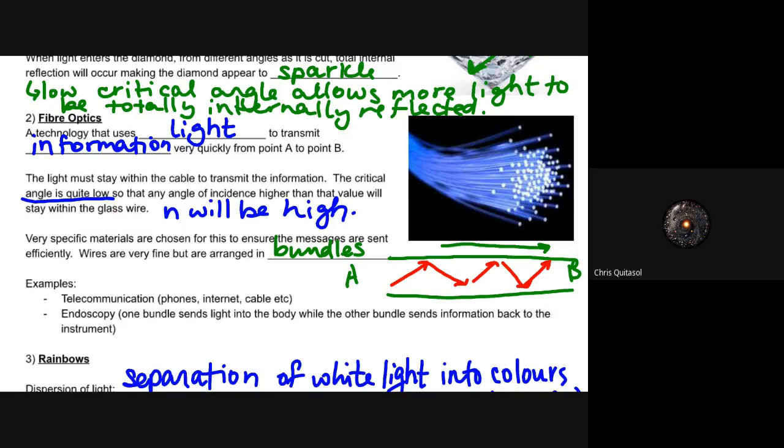Again, having that high index of refraction allows for total internal reflection to occur. So these fiber optic cables have a very high density. That means that they have a very high index of refraction, and it will allow for total internal reflection to occur.